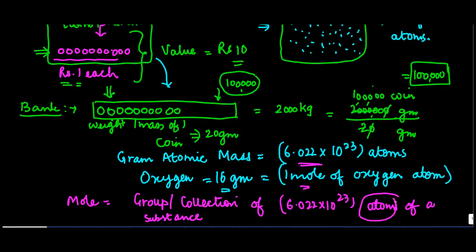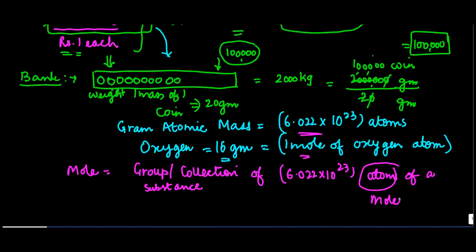This can be atoms, this can be molecules, this can be ions. So if we say one mole of oxygen atom, this is equal to how much? This is equal to 16 grams.